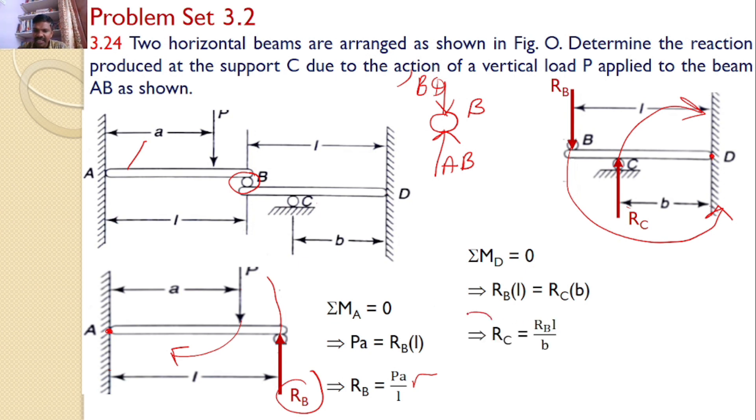Our interest is to find the reaction at C, which is RC. RC equals RB times L by B. But I know RB equals PA by L. And upon substituting that RB, then RC equals PA by L times L by B. I can find RC equals PA by B is the answer for the given problem.